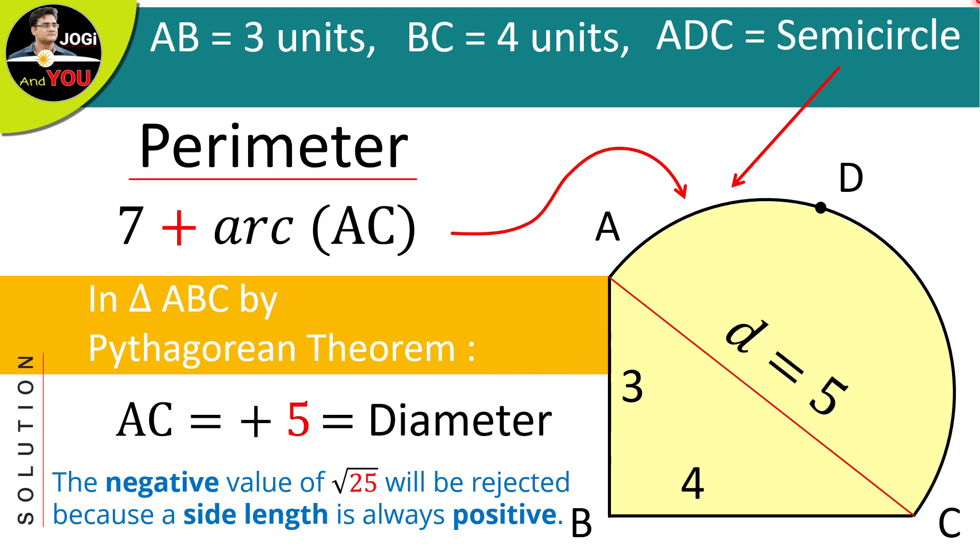There is also a shortcut to find the hypotenuse AC of this right triangle ABC. If you look carefully, the base and the perpendicular are 3 and 4 units. So, according to the Pythagorean triplet, we can say that it is a 3-4-5 right angled triangle. So, its third side which is also the hypotenuse will be 5.